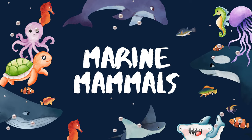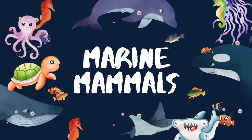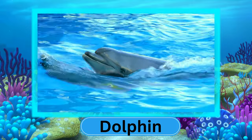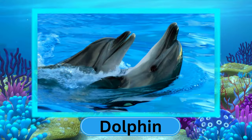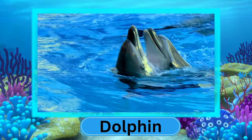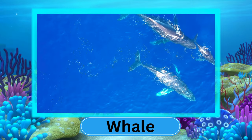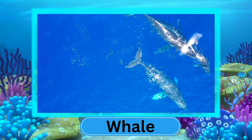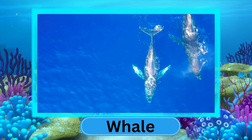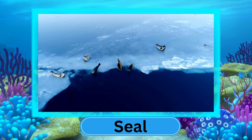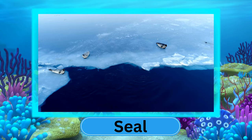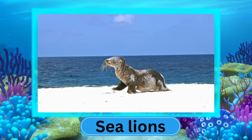Marine mammals. These are warm-blooded animals that have adapted to living in marine environments. Let's see some common examples: Whale and Sea lions.